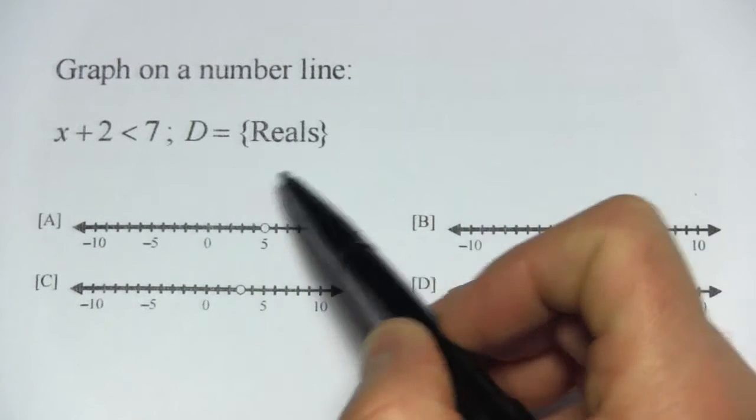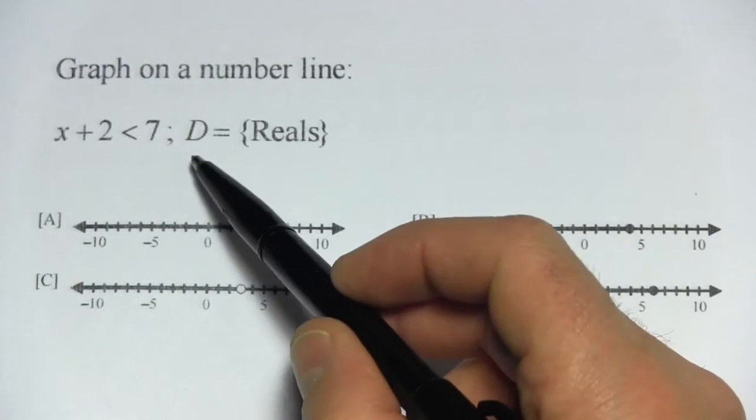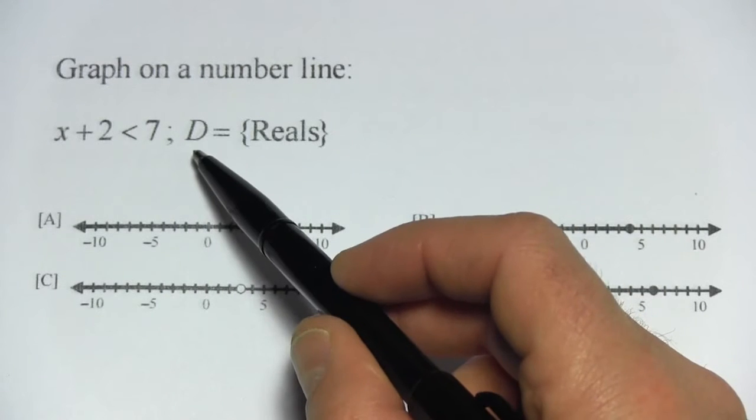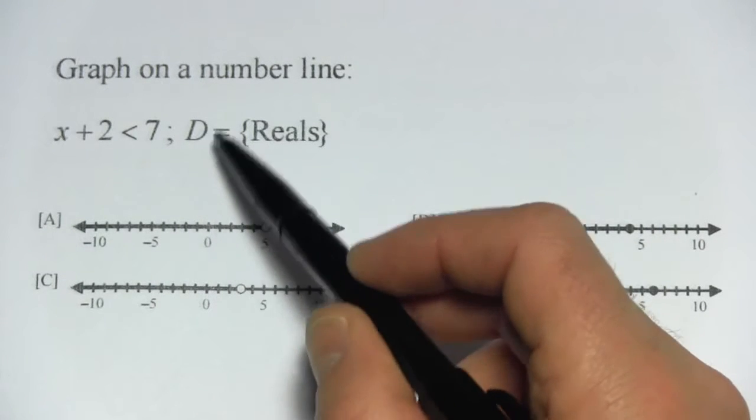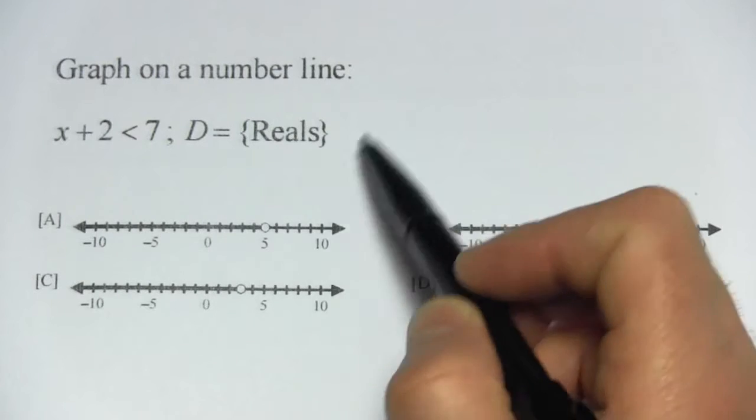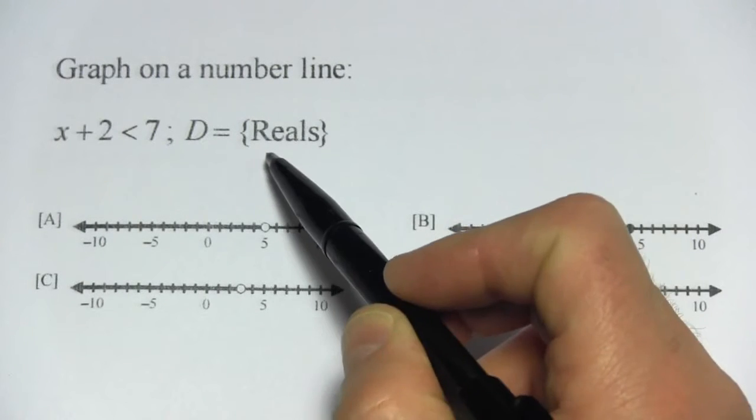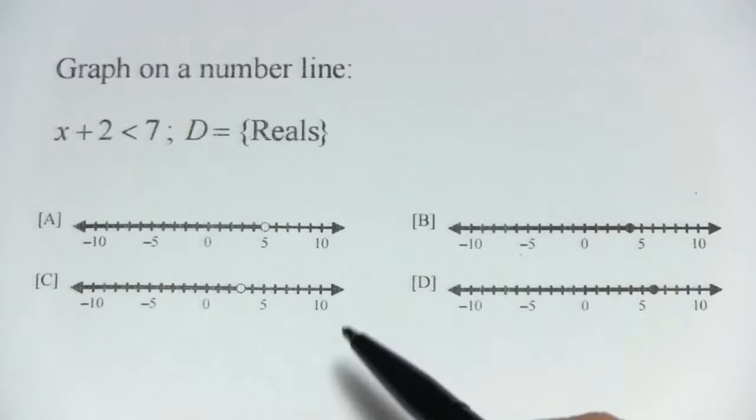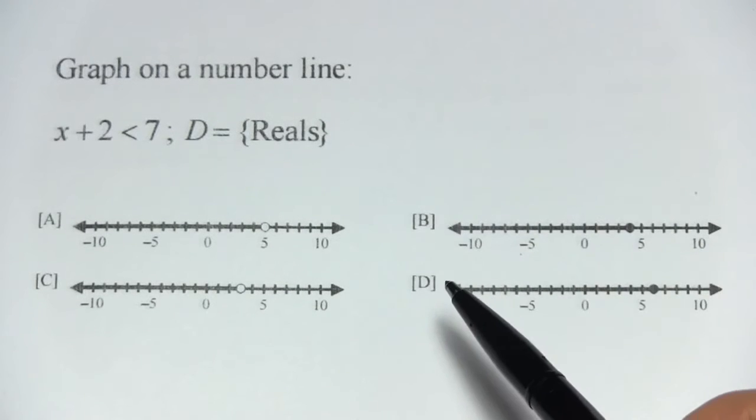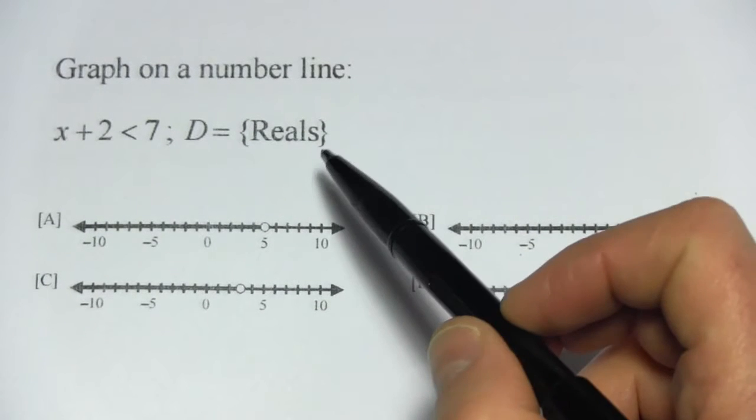The other trick is that they're declaring a domain. This big D means domain and what it's saying is that the x can be whatever I say it is. In this case, it's the set of real numbers and that's basically everything. So in this first one, you don't have to worry about it. It gets a little trickier as we move on.